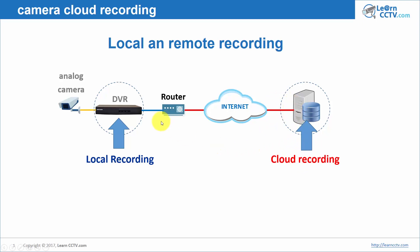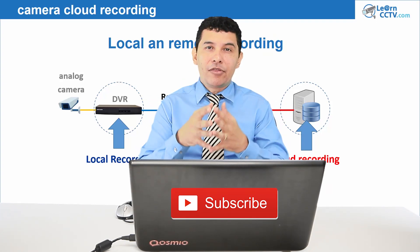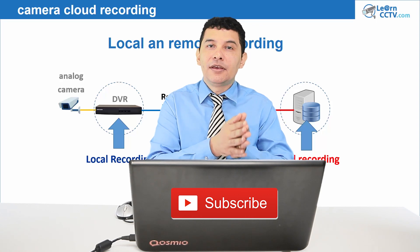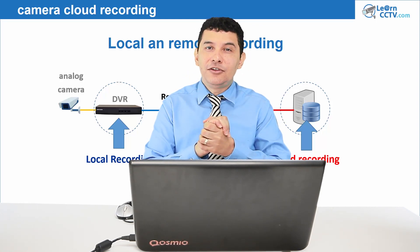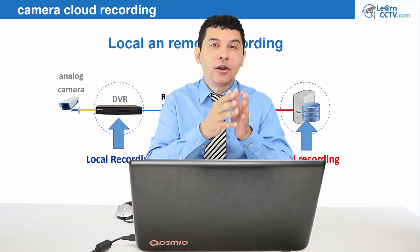Basically I have local recording here with high quality, and then I have a connection to the internet. In most cases I don't have bandwidth enough, so I need to record here with low quality. Of course you can buy more bandwidth if you want to — you can pay more and then record with high quality on both sides. But in most cases you record with low quality on the internet and high quality locally.